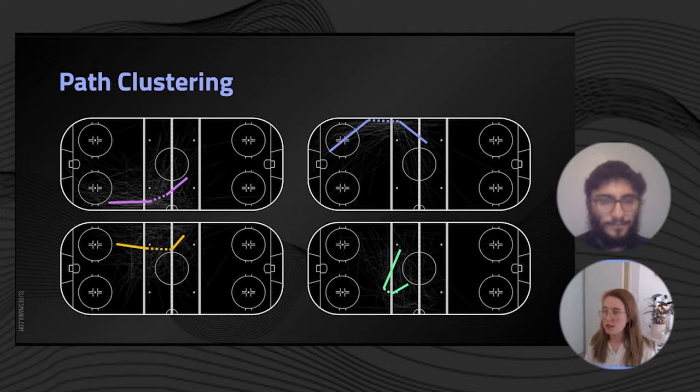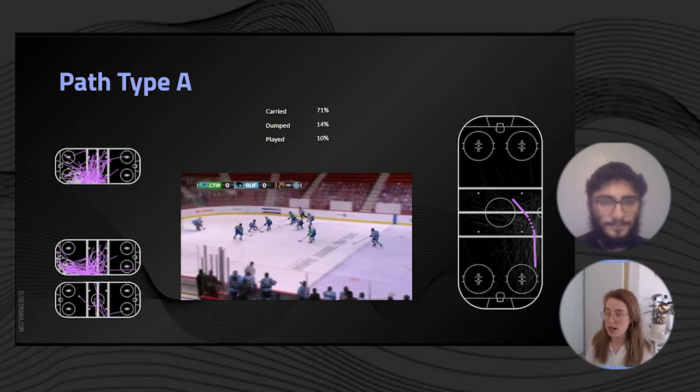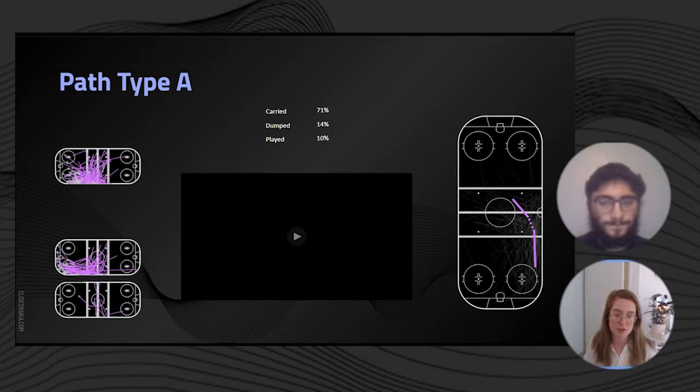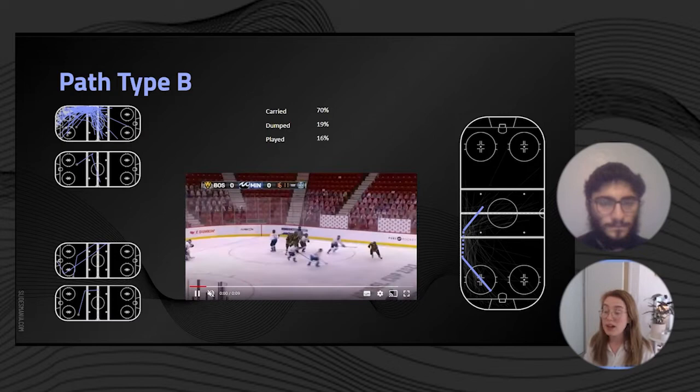Here we have pass type A, which represents largely our plays that are going up the right wing and then moving across the neutral zone towards the center. These had a 71% chance of being carried, a 14% chance of being dumped, and a 10% chance of being played. This will become more important throughout the presentation as we look at these strategies more in depth.